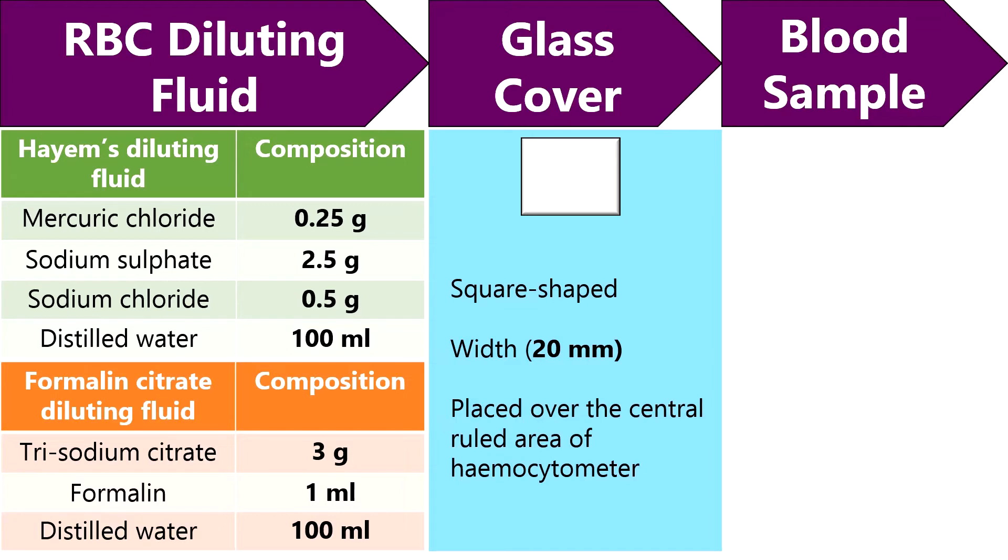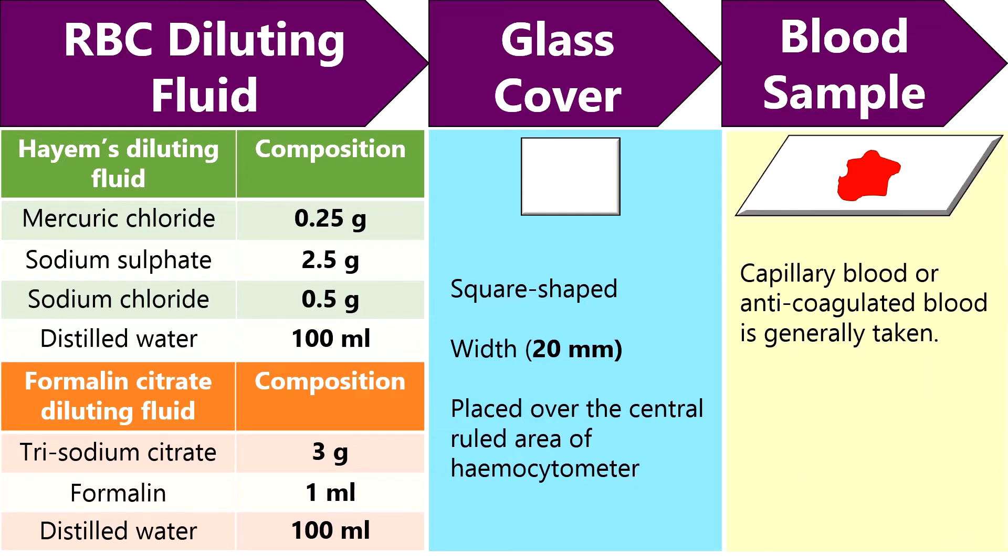Then blood sample or RBC specimen is a prerequisite need to calculate the red blood cells. Generally, a capillary blood or anticoagulated blood is used. Capillary blood can be taken by directly pricking the tip of a ring finger.